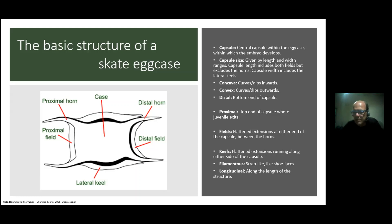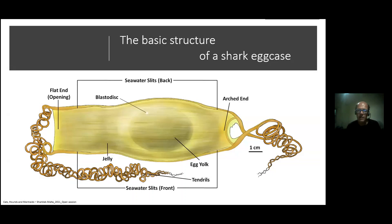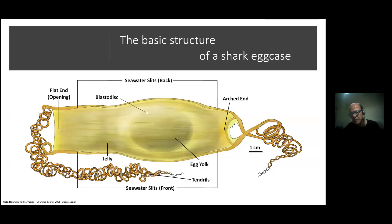The basic structure of a shark egg case is quite different from a skate case — there are no horns, but there are tendrils. The tendrils are long fiber strands used to entangle and hold the capsule in place while the shark is developing inside. They are quite different in shape.